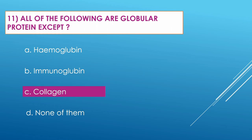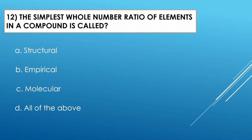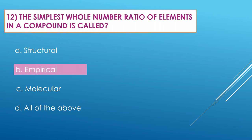Question number twelve: The simplest whole number ratio of elements in a compound is called — Option A: structural. Option B: empirical. Option C: molecular. Option D: all of the above. The correct option is empirical.